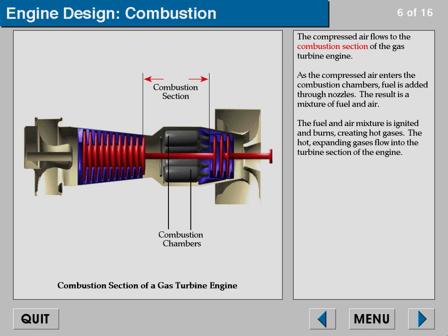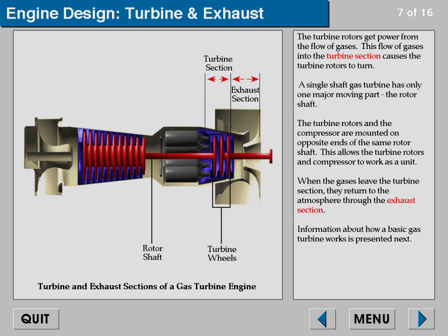The hot expanding gases flow into the turbine section of the engine. The turbine rotors get power from the flow of gases, causing the turbine rotors to turn. A single shaft gas turbine has only one major moving part — the rotor shaft. The turbine rotors and the compressor are mounted on opposite ends of the same rotor shaft, allowing them to work as a unit.